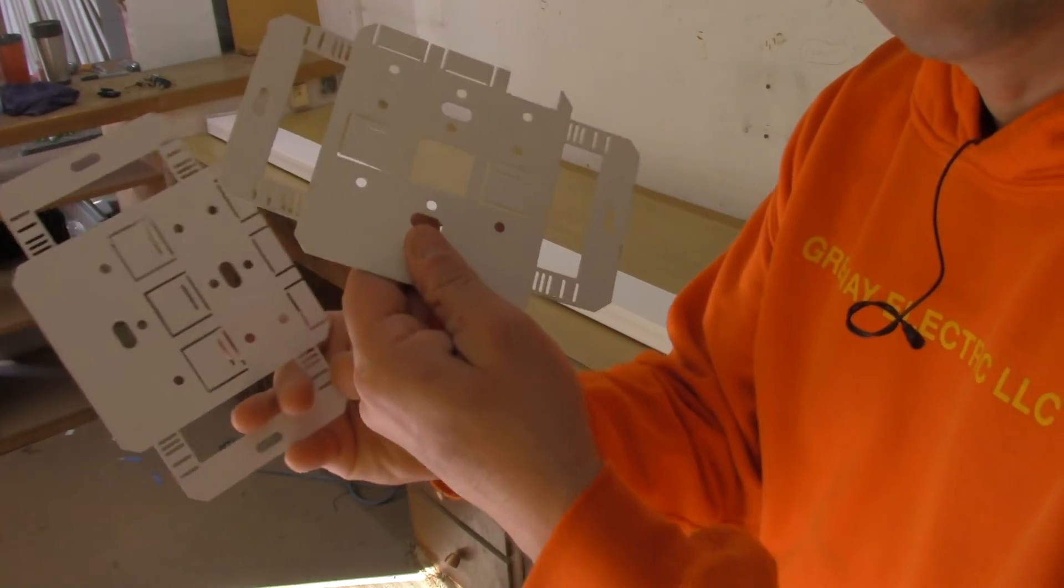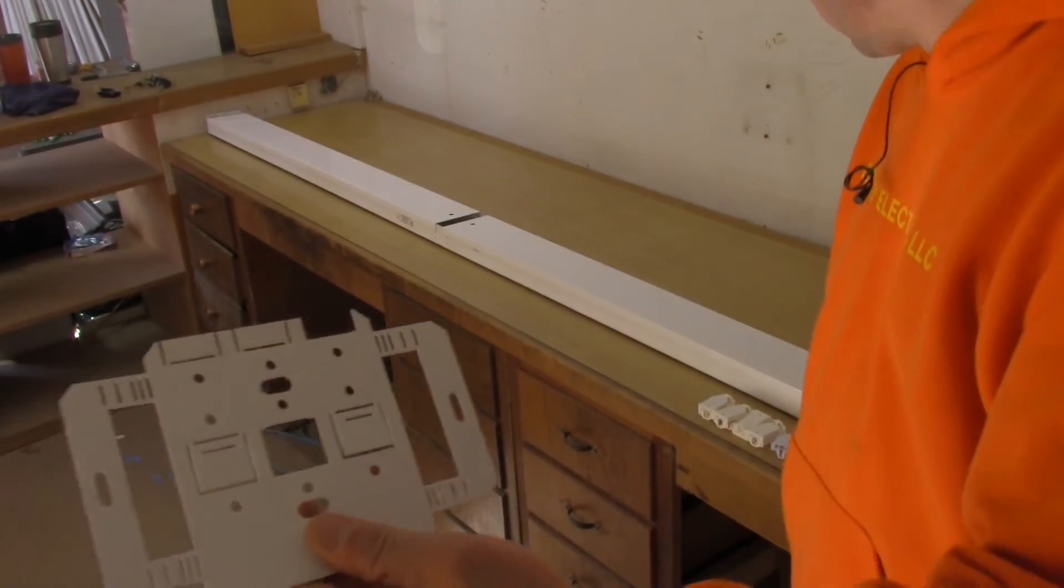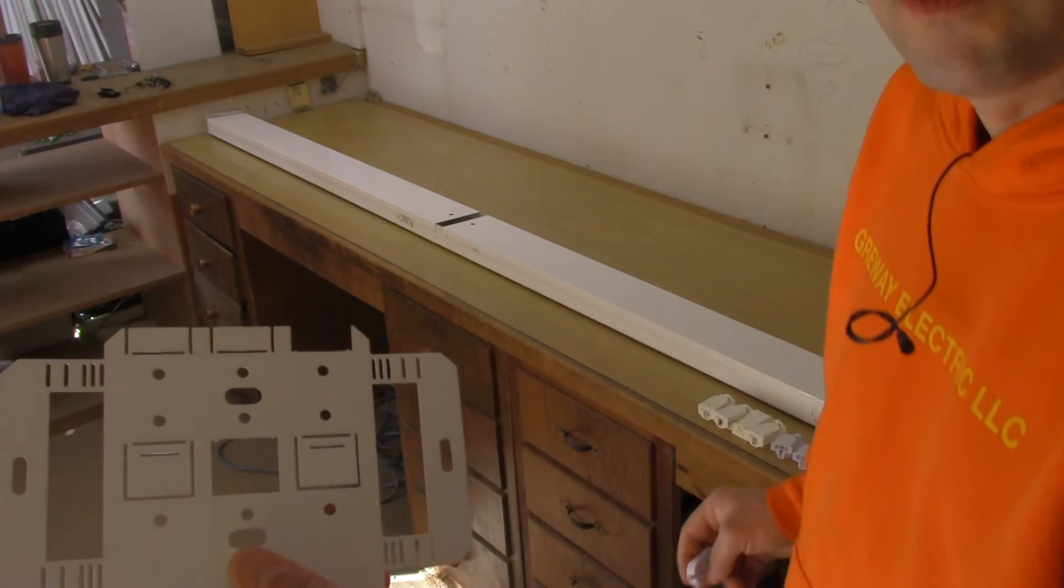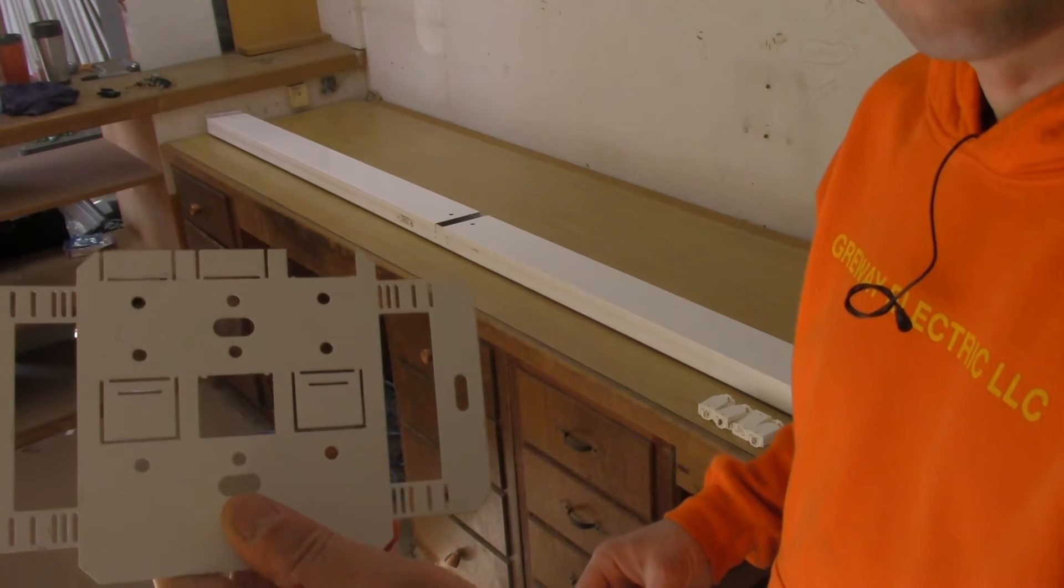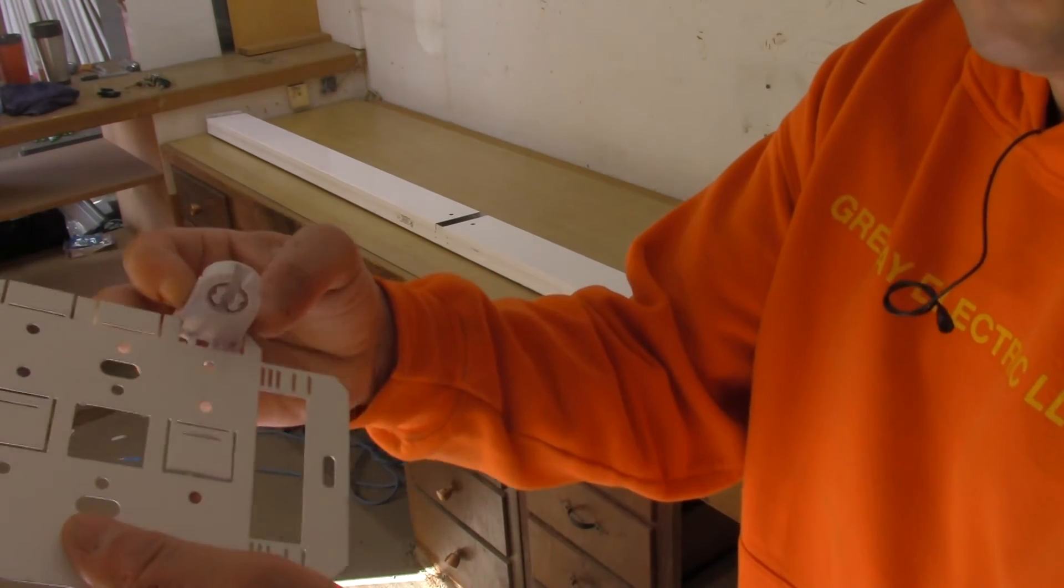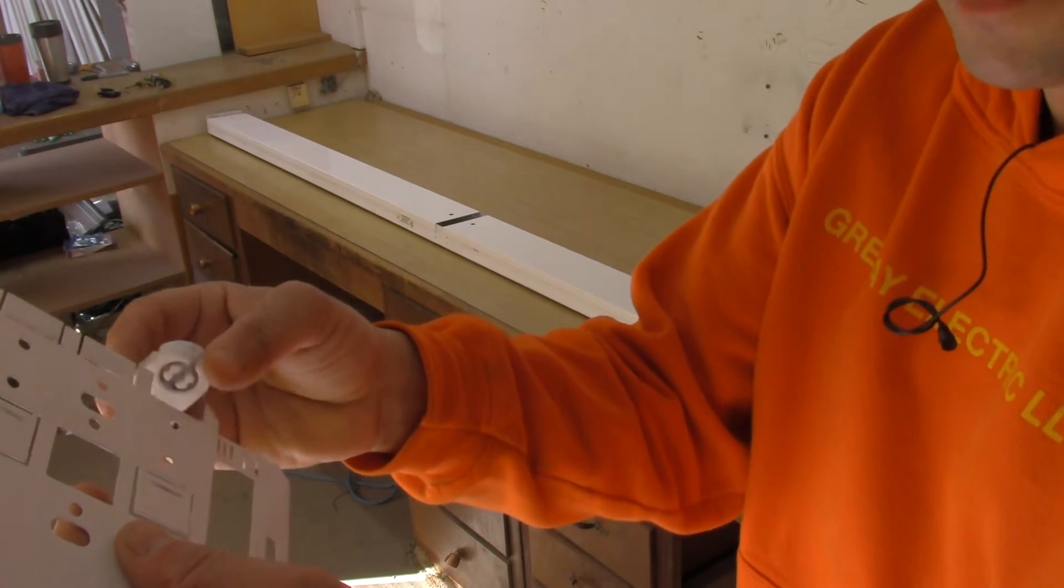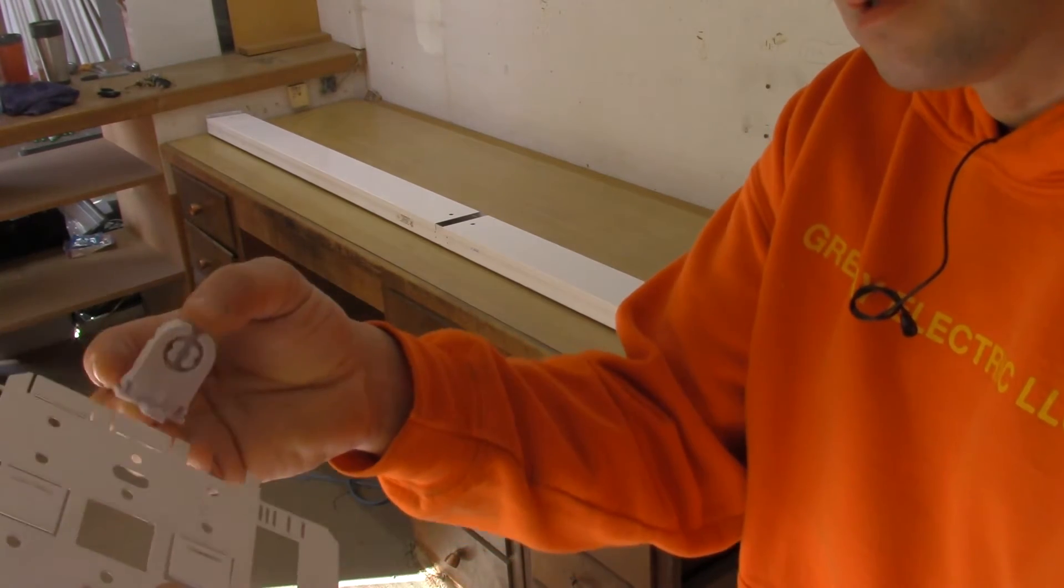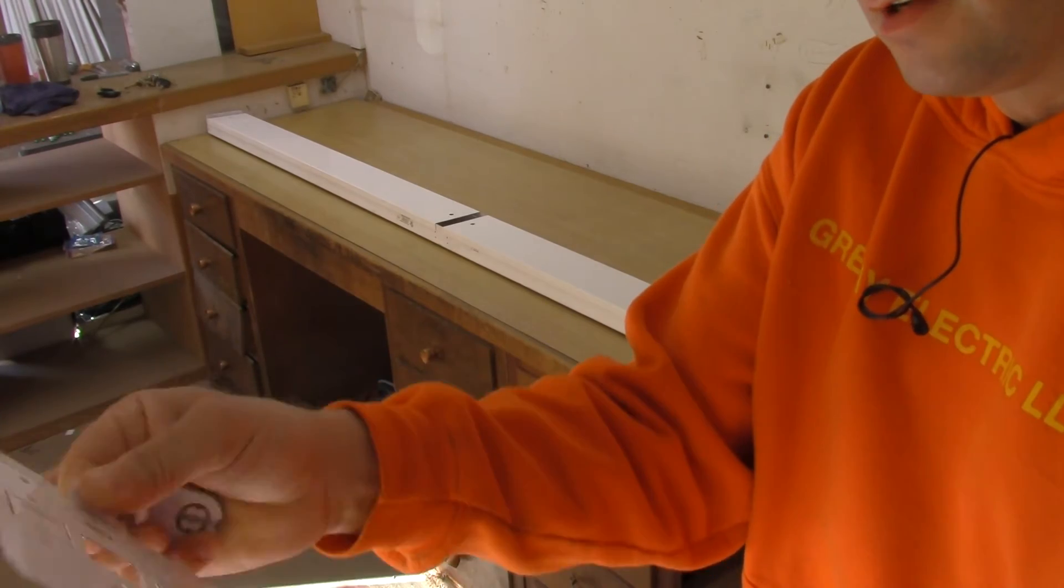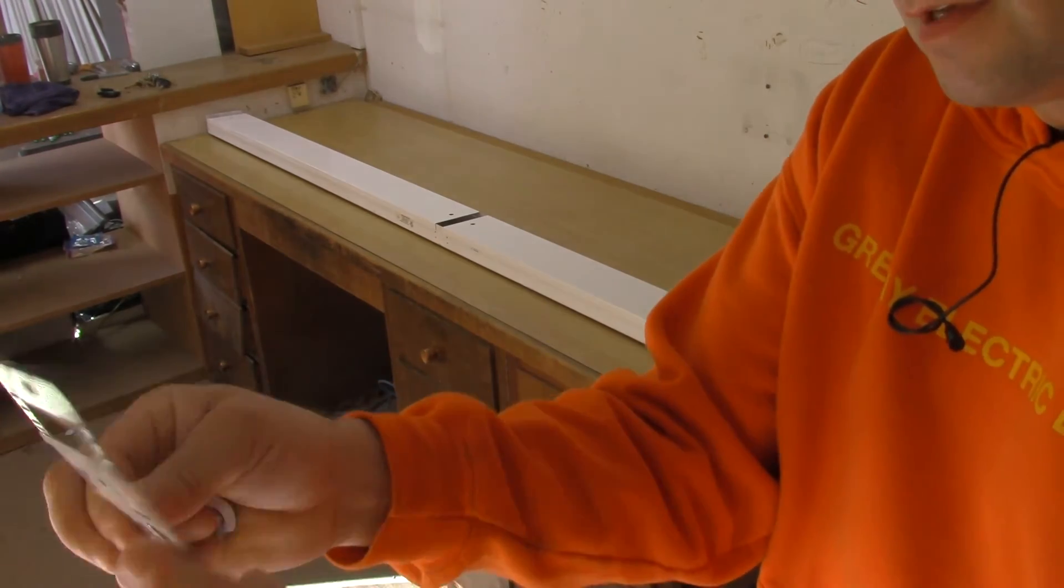This kit is universal. You can install this in a four foot or eight foot long channel fixture. You can choose the amount of lamp sockets that you would like. You want just one lamp socket on the end, one in the middle.